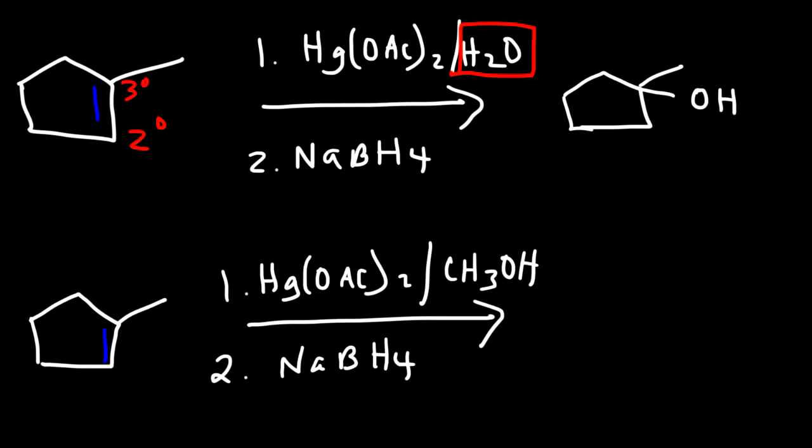Well, the alkoxymercuration-demercuration reaction has the same regiochemistry as the reaction above. The only difference here is that we're adding an alcohol instead of H2O. And so if you drop off the H in this alcohol, we're going to add an OCH3 group. And so this particular reaction converts an alkene into an ether. And so that's the difference. But now let's go over the mechanism for that reaction.